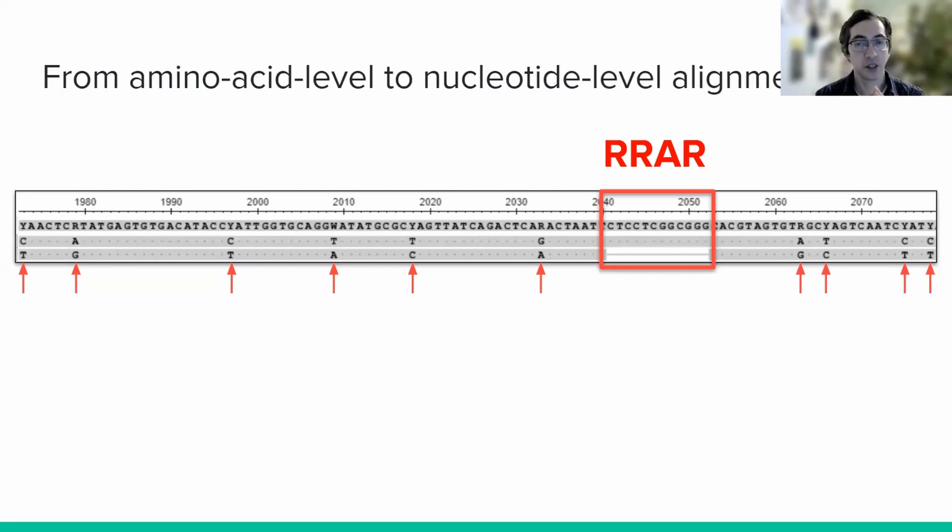We have now established that although the RaTG13 and SARS-CoV-2 genomes look identical from an amino acid perspective, they are actually quite distant. With this observation in mind, we hope you agree with us that we need to examine some other relatives of SARS-CoV-2 in order to better understand where the PRRA insertion came from.